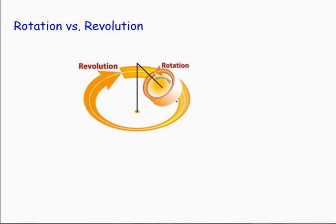Rotation and revolution are both describing circular motion. However, in rotation, the axis along which an object rotates is inside the object, whereas for revolution, the axis it's going around is outside the object. For both of these types of motion, the same equations are going to be used.